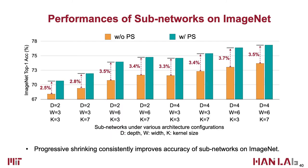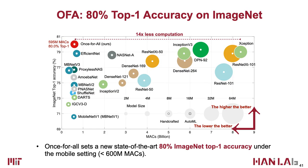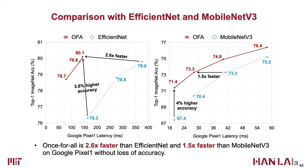Across many configurations, progressive shrinking — shown in green — consistently outperforms without progressive shrinking — shown in yellow. Once-for-All is on the top left corner in the accuracy-computation trade-off curve, which is highly efficient. It sets a new state-of-the-art 80% top-1 accuracy on ImageNet under 600 million MACs constraints. Compared to EfficientNet and MobileNetV3, Once-for-All is 2.6 times and 1.5 times faster respectively.